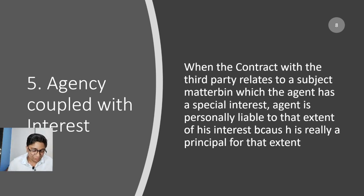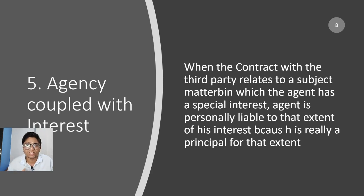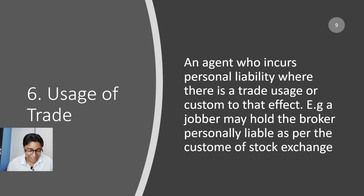Next is agency coupled with interest. This means I am acting as an agent on your behalf — for example, buying some property for you — but I also have a 10% share in that property. In that situation, I will also be personally liable to that extent, because 10% of the subject matter belongs to me. If the agent has some interest in the subject matter, the agent is personally liable to that extent.